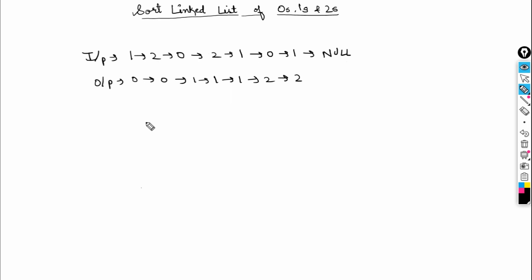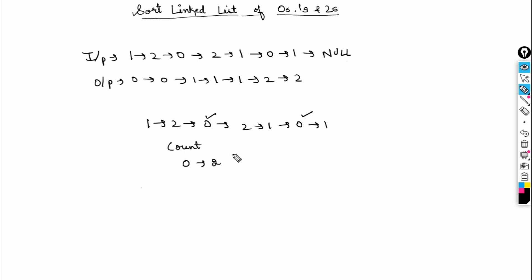So how can we get this output? We can count the number of zeros first. In this list, there are two zeros. Then count the number of ones — there are three ones. And the number of twos — there are two twos.